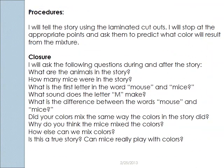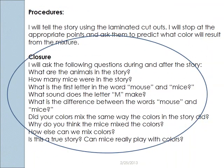Now, because this is a storytelling, I've also added a section on closure. At the end of the story, I'm going to ask the following questions — maybe some of them I'll throw in during the story. And I'm using Bloom's taxonomy here. What are the animals in the story? How many mice were in the story? What's the first letter in the word 'mouse' and 'mice'? Because that was one of my objectives.